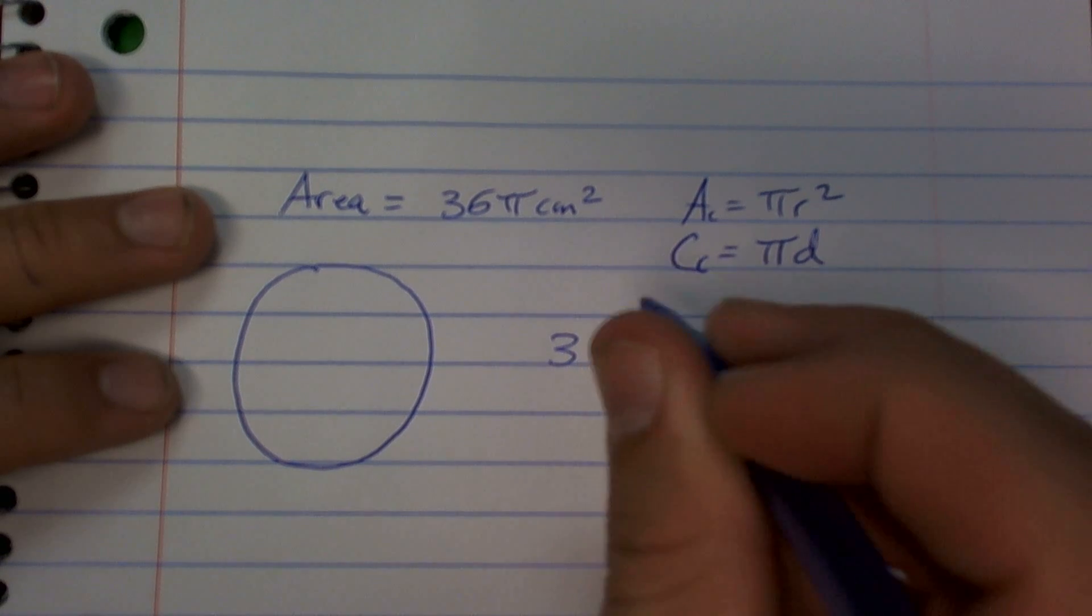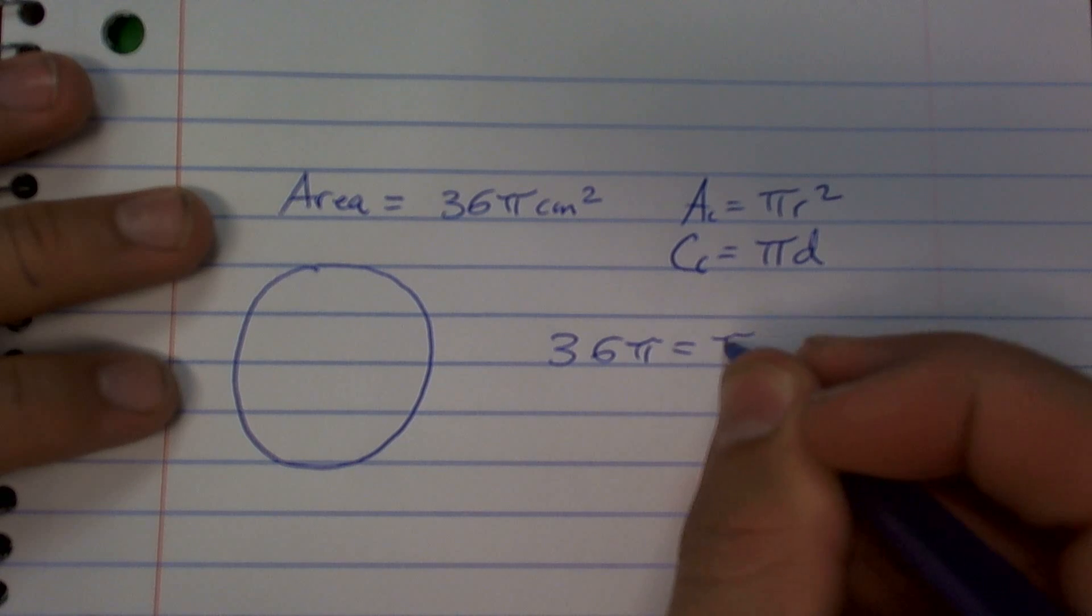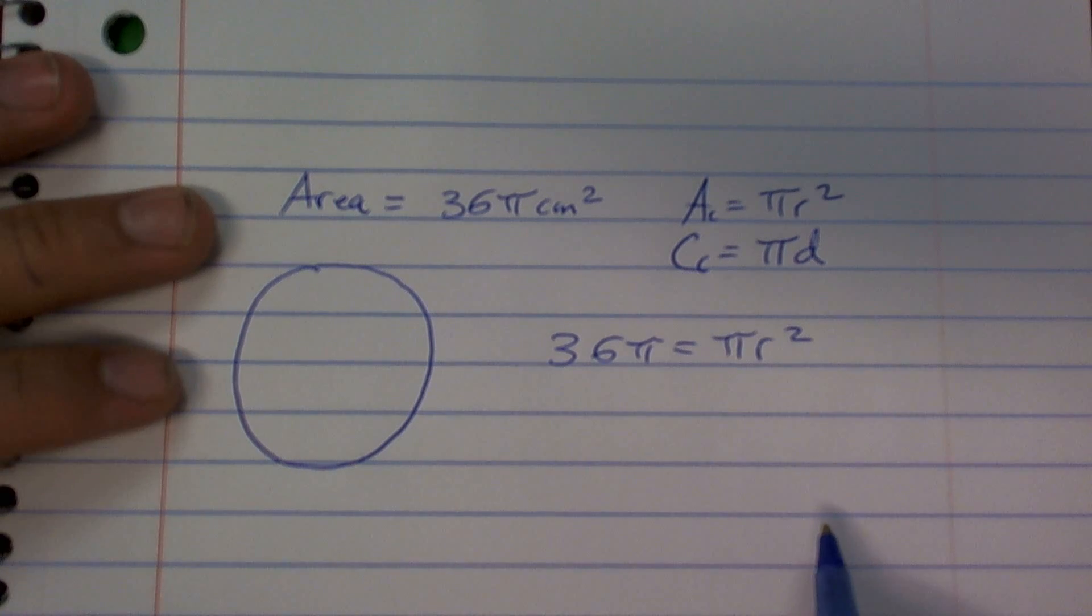So I can write 36 pi equals area, and that equals pi r squared. Does that make sense? Yeah. Okay.